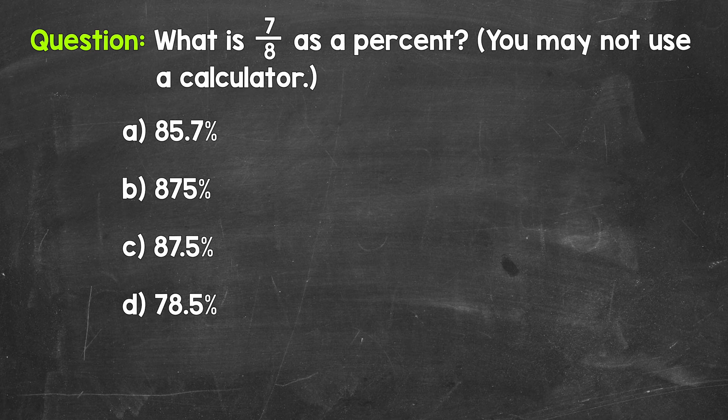Otherwise, let's jump right into it. When we convert a fraction to a percent, we can start by dividing the numerator, the top number of the fraction, by the denominator, the bottom number of the fraction.